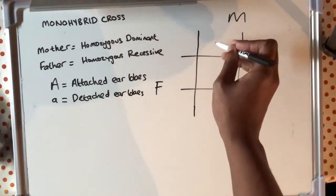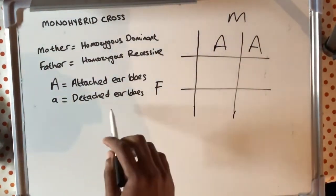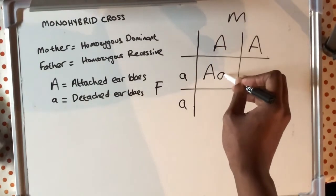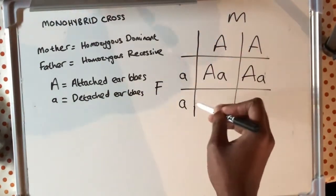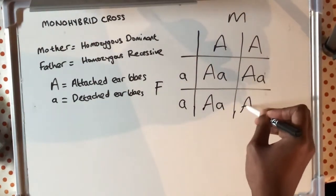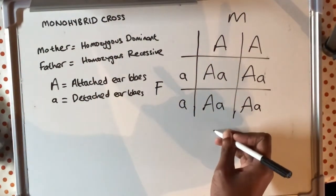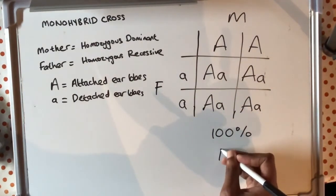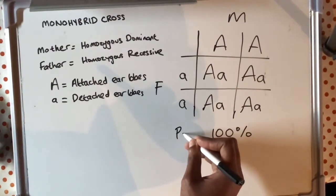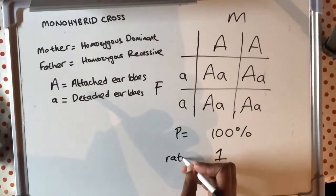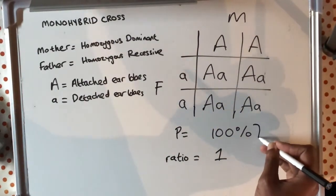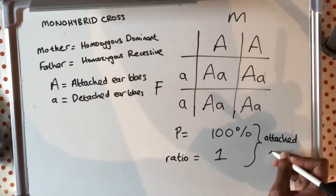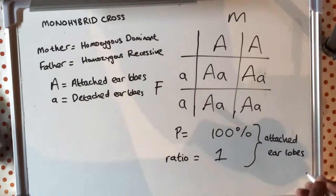If we fill out the Punnett square, because one parent is homozygous dominant and the other homozygous recessive, all offspring will have capital A lowercase a — meaning they are all heterozygous in their genotype. For their phenotype, they should all have attached ear lobes. So the percentage of offspring with attached ear lobes will be 100%, and the ratio will be 1.